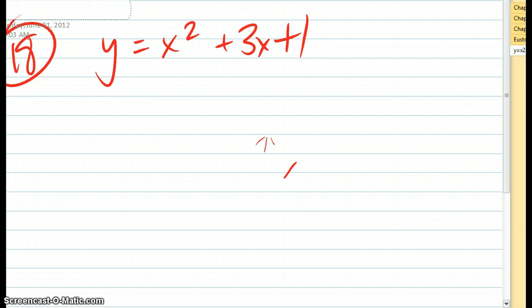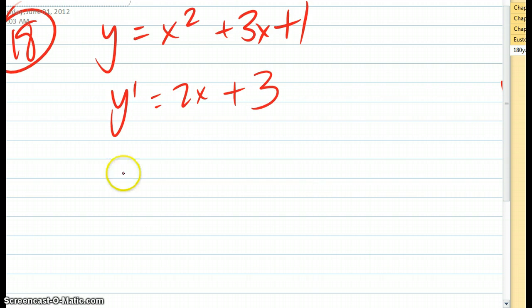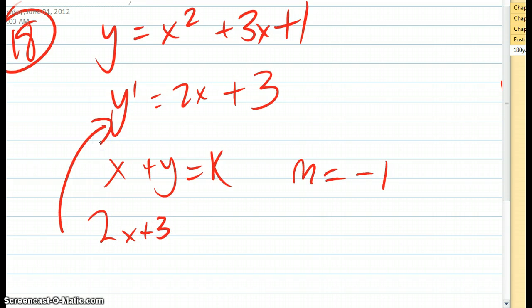So we have our starting equation y equals x squared plus 3x plus 1, and y prime equals 2x plus 3. Okay, so for x plus y equals k, when you solve for the slope, you get m equals negative 1. Okay, so for 2x plus 3, which is the slope of the first equation, equals negative 1. Solving for x, we get x equals negative 2.